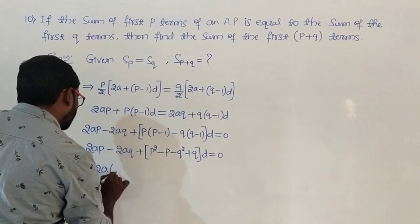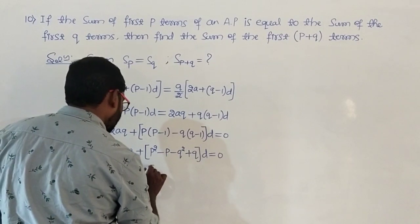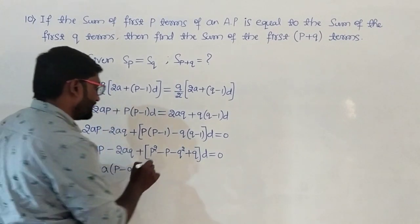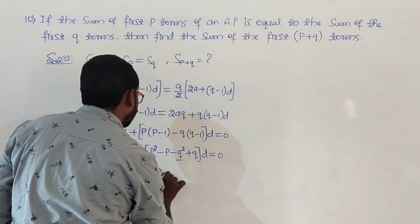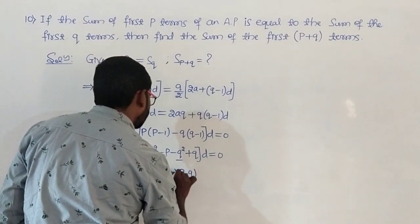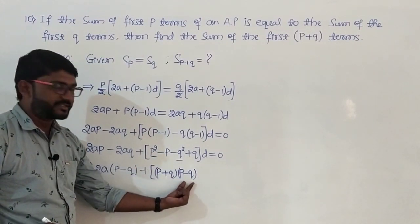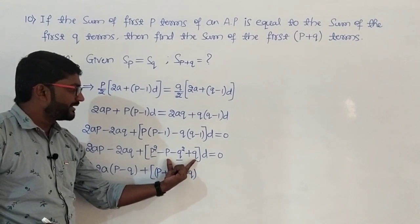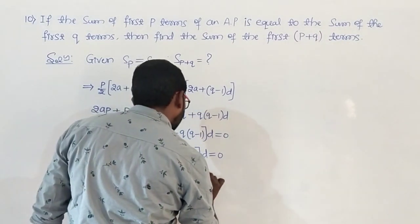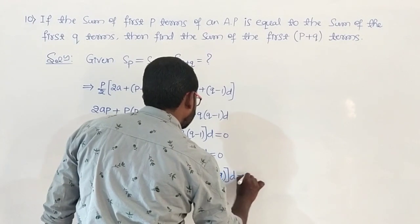In the first two terms, take 2a common to get p minus q. Then p squared minus q squared can be written as p plus q into p minus q. Taking minus common from the remaining two terms gives another p minus q factor, so we get 2a into p minus q plus p minus q times p plus q minus 1 into d equals 0.